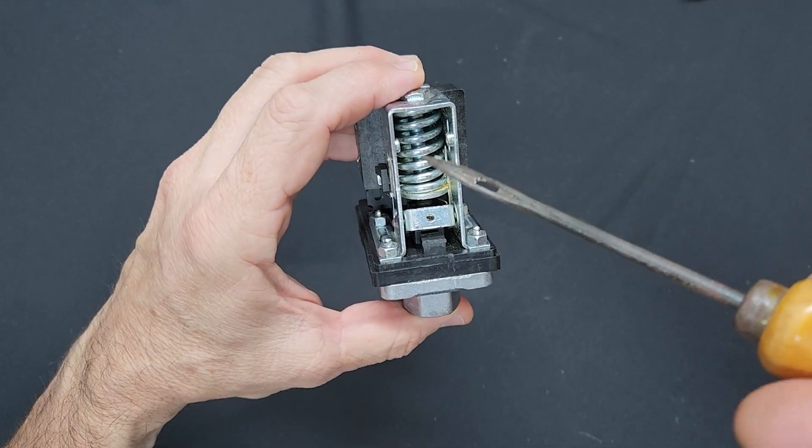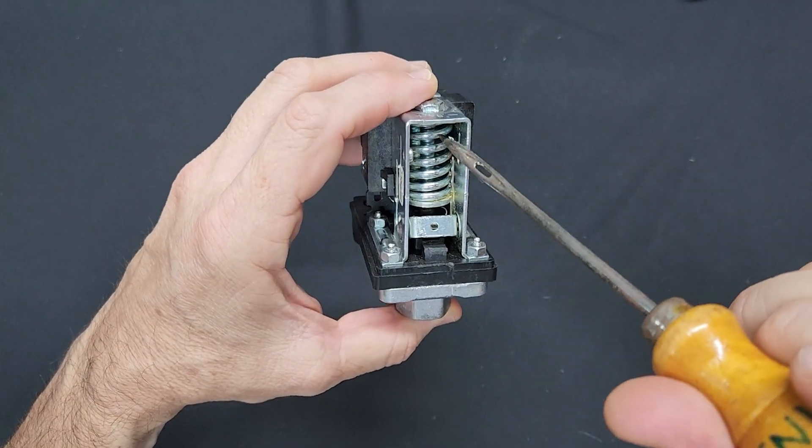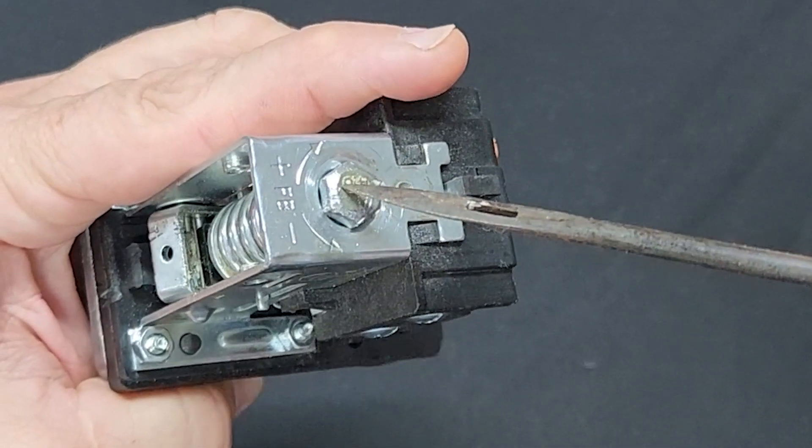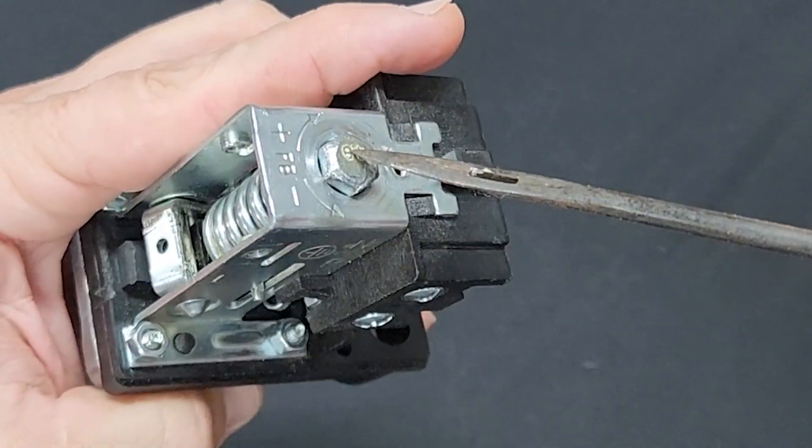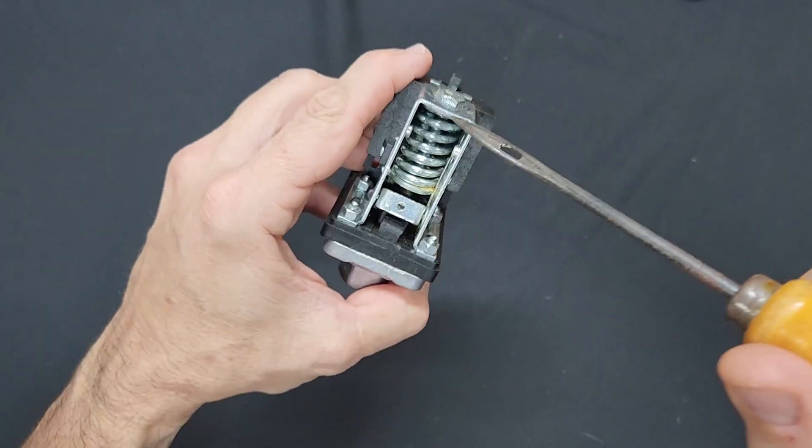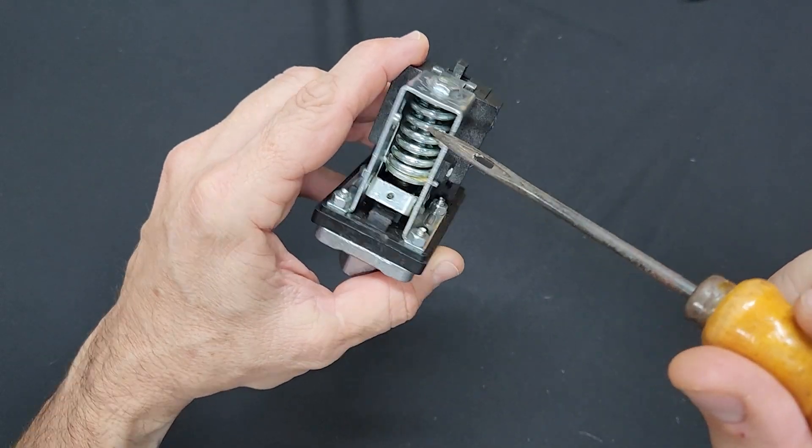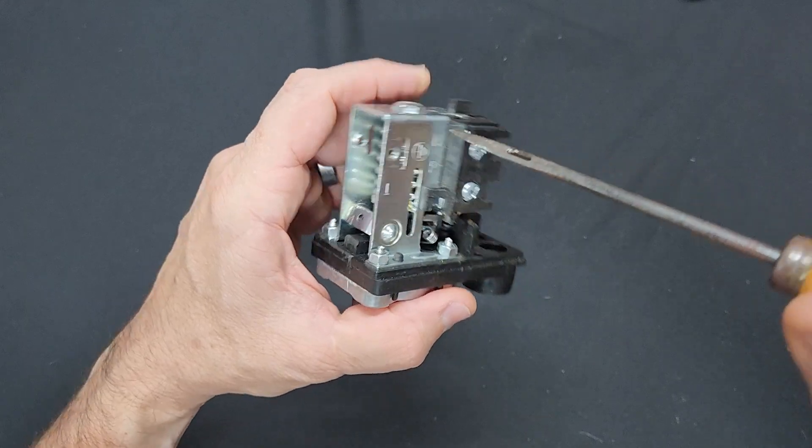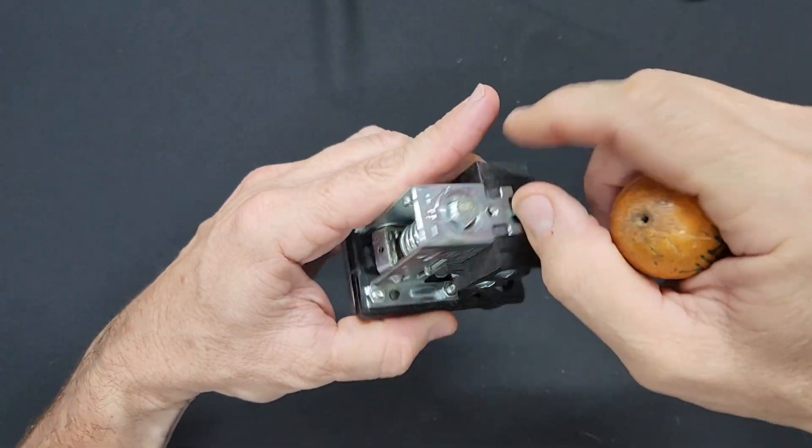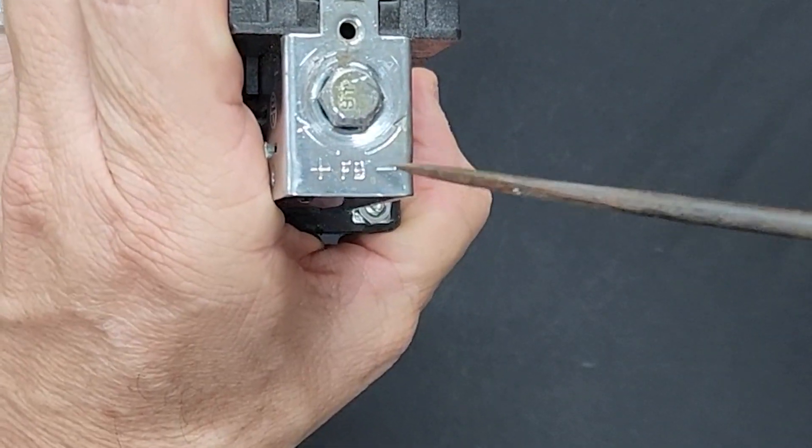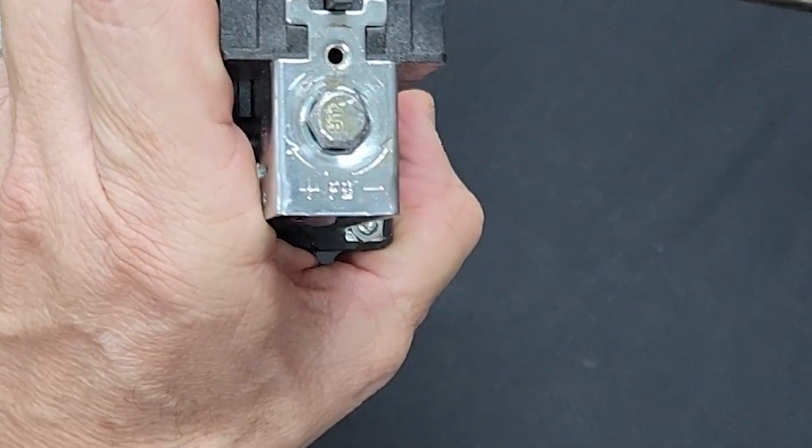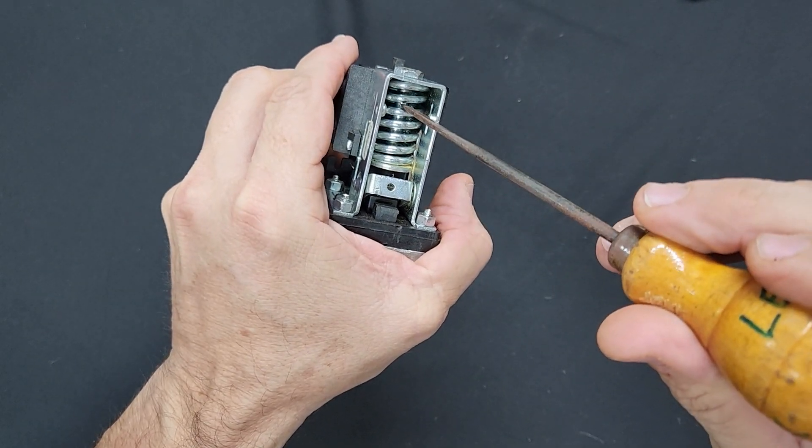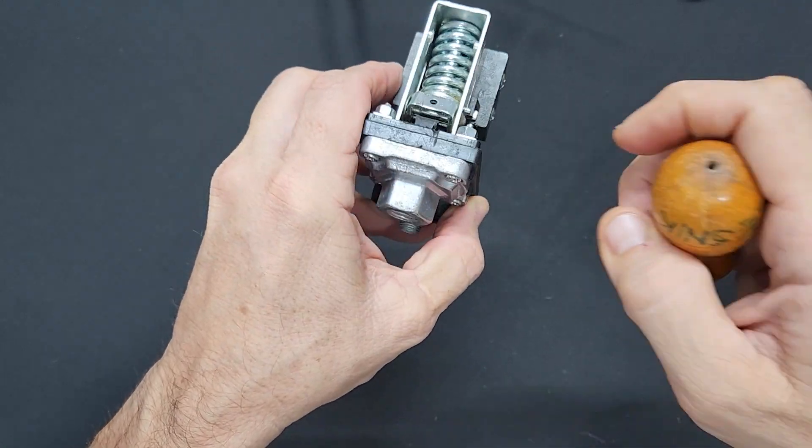I'll just show you first of all there is a spring here. This spring is very important and it's controlled by here. The tension of it can be loosened or increased, and basically what this does is this will control how much psi your tank is being pumped to. So if you make it loose, it says plus minus, so if we go anti-clockwise